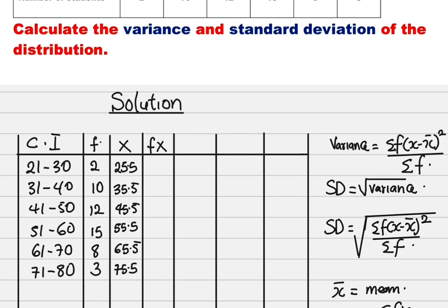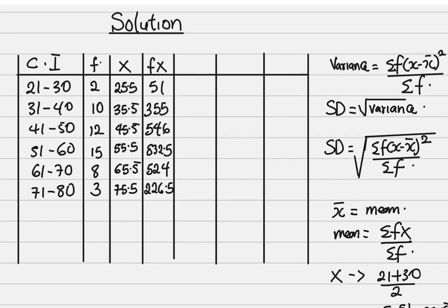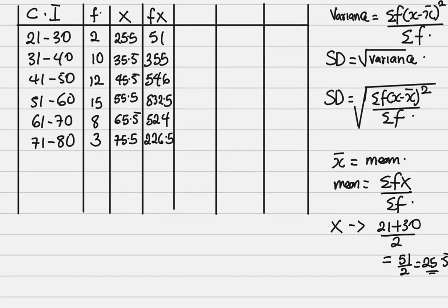When you multiply f times x, this is what you get. The first value is 51, then 355, then 546, then 832.5, then 524, and the last is 226.5. What I did here is multiply frequency by the mid-value. The summation of f is 50.